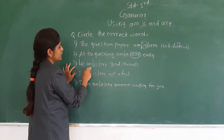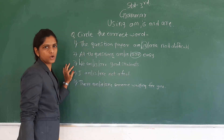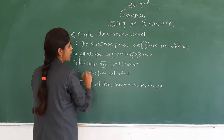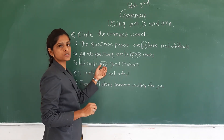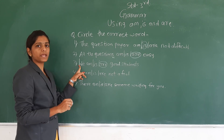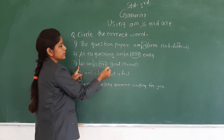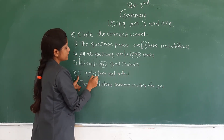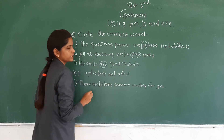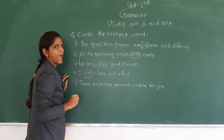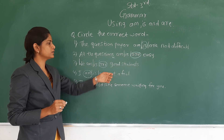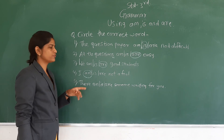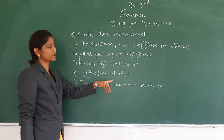Third: we — am, is, or are — good students. Here also we get are, because are is used to describe many people. We means many, more than one students. So: we are good students. For I — am, is, or are — not a fool. I is used with am. Am is used for saying about ourselves, describing ourselves. So: I am not a fool.